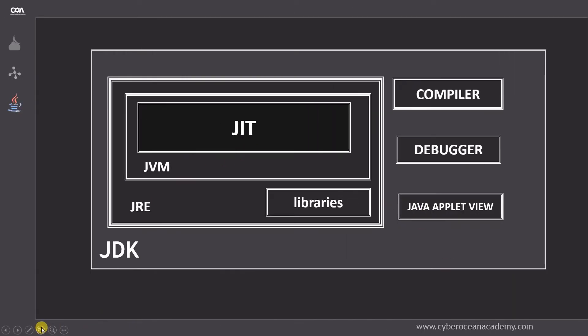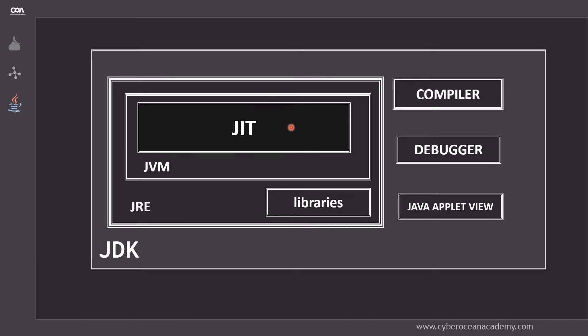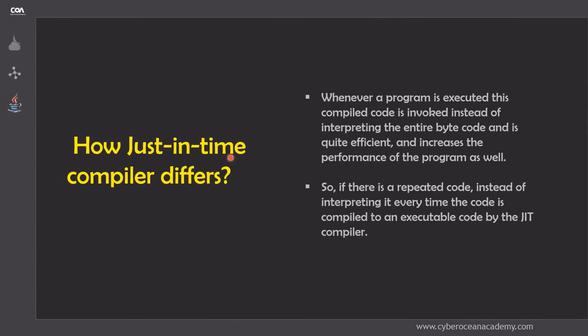As you can see, JVM has a JIT — that is our just-in-time compiler — it is an integrated part of the Java Virtual Machine. Now, how does the just-in-time compiler differ from other compilers? Whenever a program is executed, this compiled code is invoked instead of interpreting the entire bytecode, which is quite efficient and increases the performance of a program. If there is repeated code, instead of interpreting it every time, the code is compiled into executable code by the JIT compiler.